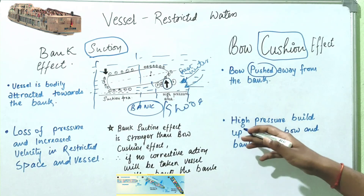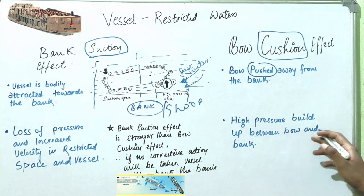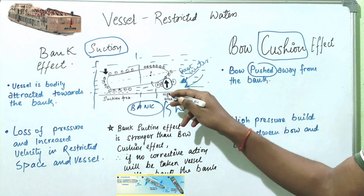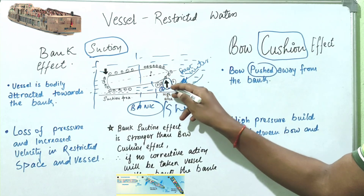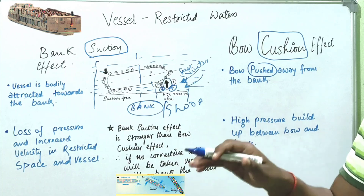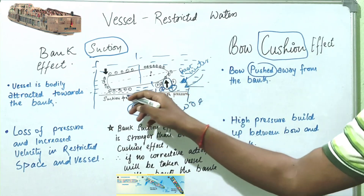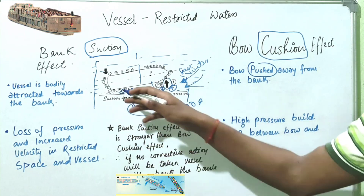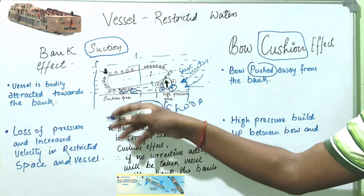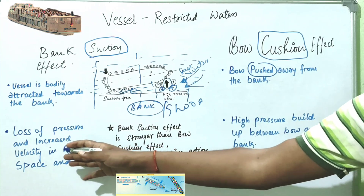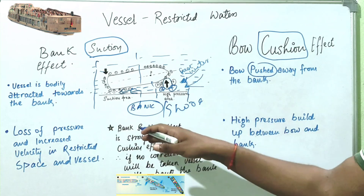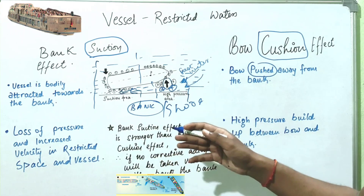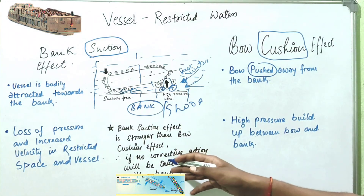High pressure builds up between the bow and the bank. There is also loss of pressure and increased velocity in the restricted space, which causes a suction effect. You should know that bank suction effect is stronger than bow cushion effect.